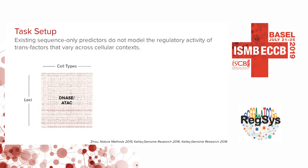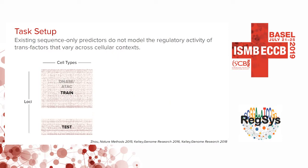Consider a matrix with loci on one axis and cell types on another, where each element indicates chromatin accessibility at that locus in a given cell type. We use binary chromatin accessibility, so each element is either one or zero. Recent work has focused on sequence-only models such as DeepSEA by Zhao, Basset and Basenji by Kelley, which evaluate by splitting this matrix along the locus dimension, holding out a few chromosomes as a test set.